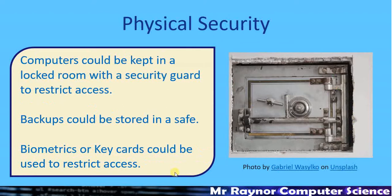Another option that people often forget when answering IGCSE questions is quite a common-sense one: physical security. If I want to keep some data safe, I can literally put it in a safe or store it somewhere that can't be broken into. We could use CCTV to monitor who goes in and out of buildings, or have security guards. You can get safes that are fireproof and waterproof to protect against natural disasters, and combine these with biometrics or key cards to restrict access to the room where data is kept.